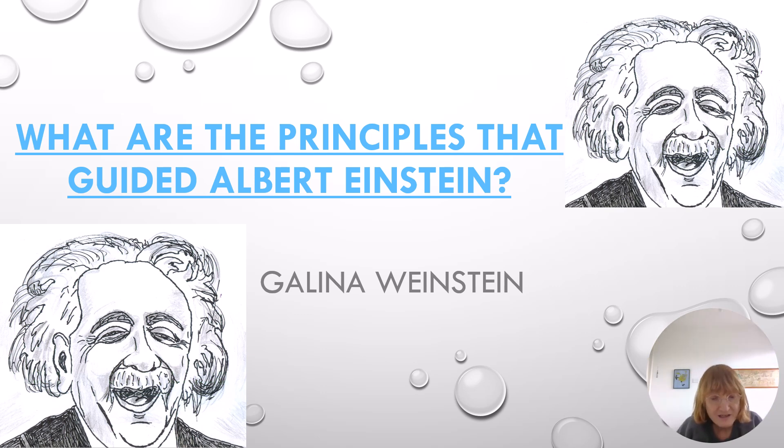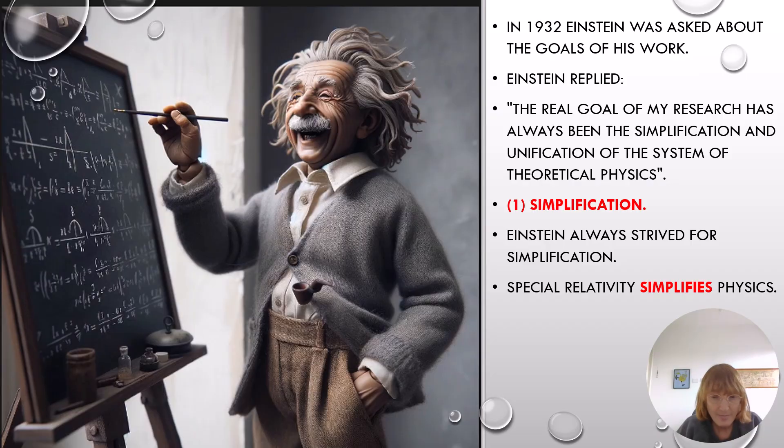What are the principles that guided Albert Einstein? In 1932, Einstein was asked about the goals of his work. Einstein replied, the real goal of my research has always been the simplification and unification of the system of theoretical physics.